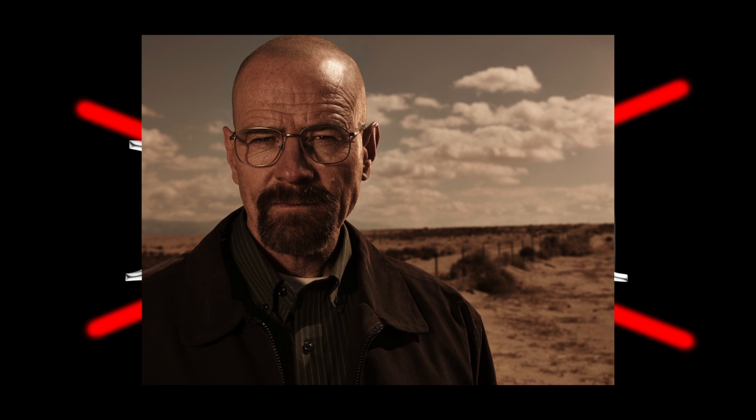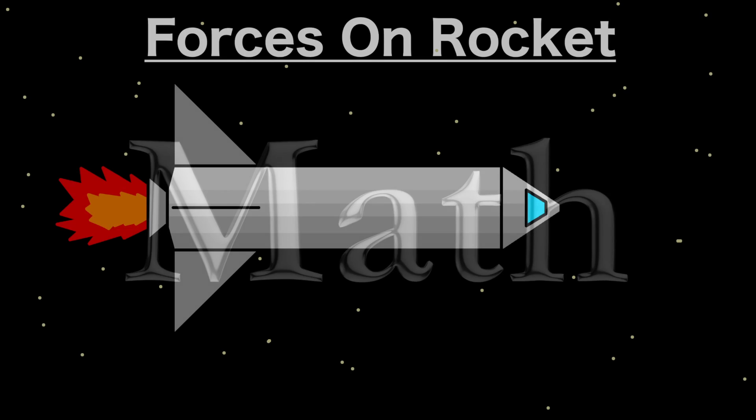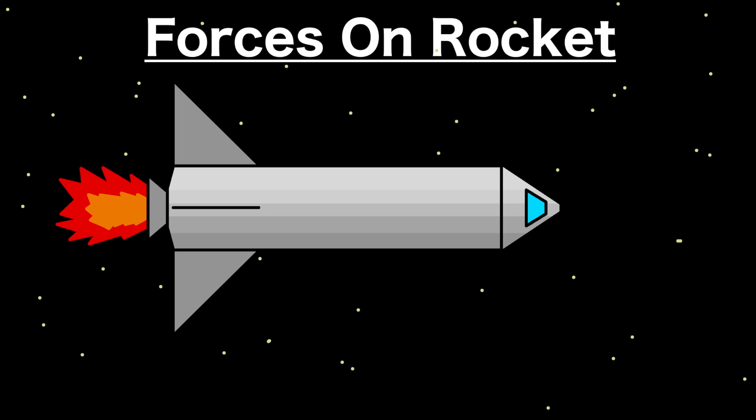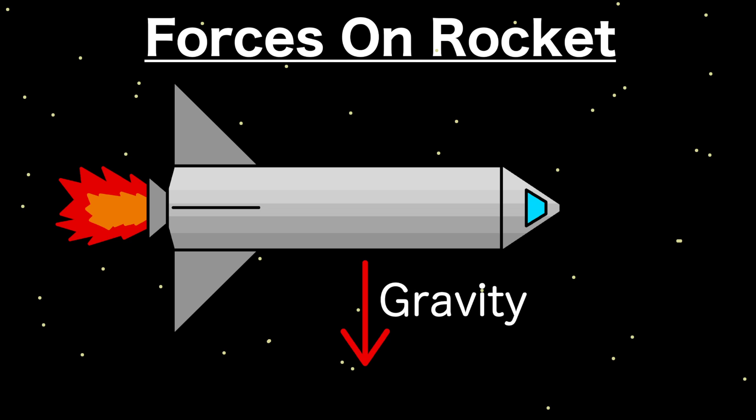That way we can stay awake for all the math that we are also going to have to do. Consider the forces on the rocket in orbit. First, there is gravity pulling downward toward Earth. Second — well, that's pretty much it. We need to figure out the velocity to achieve a circular orbit depending on gravity.